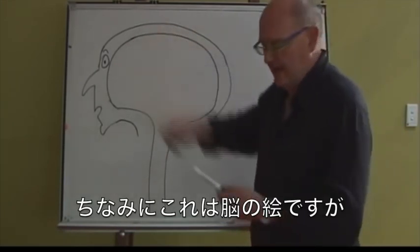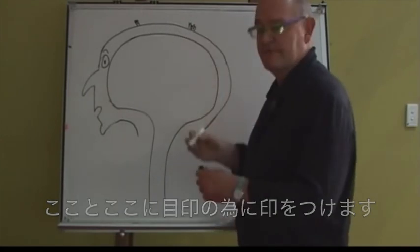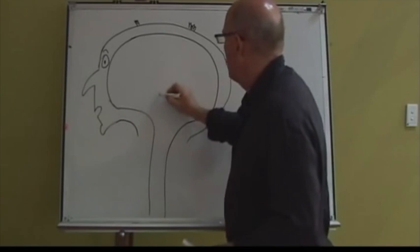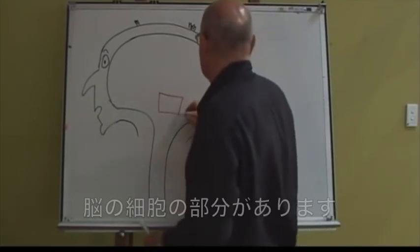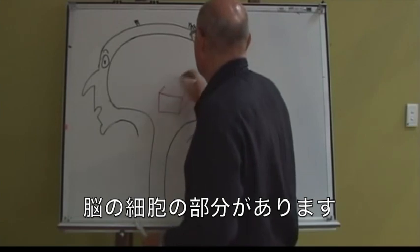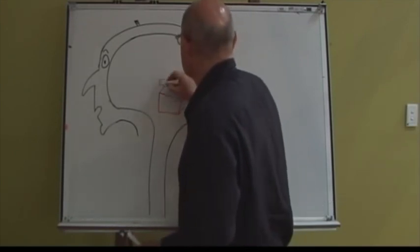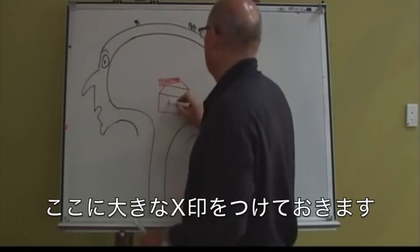This is my picture of the brain here. We'll put a little bit of hair on here just to orientate yourselves. Deep in our brains, we have areas that work together to produce remarkable pain-killing drugs. I'll draw it as a box for you, and we'll put a big cross on it.